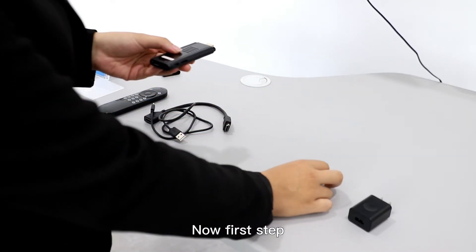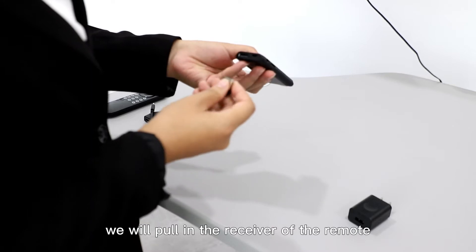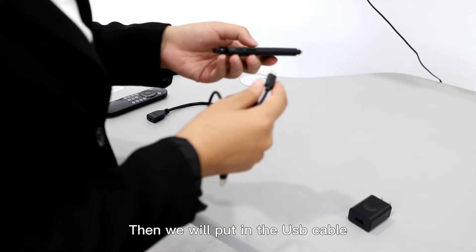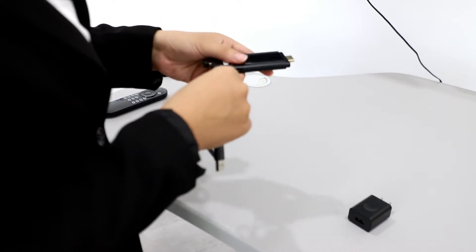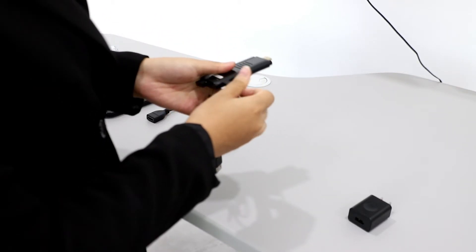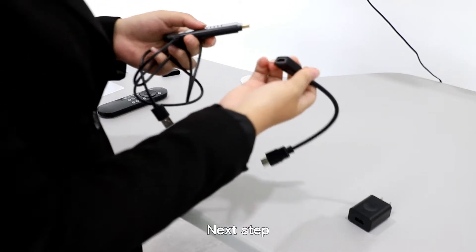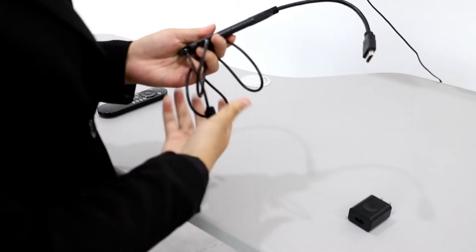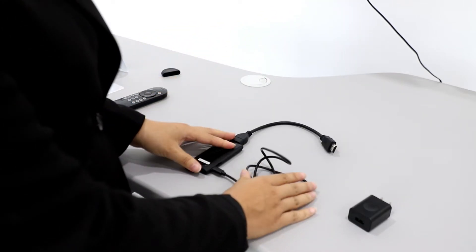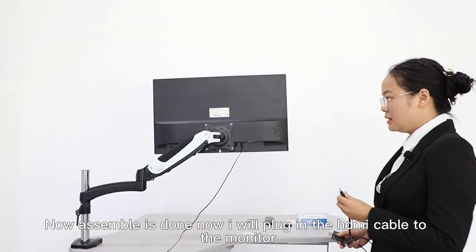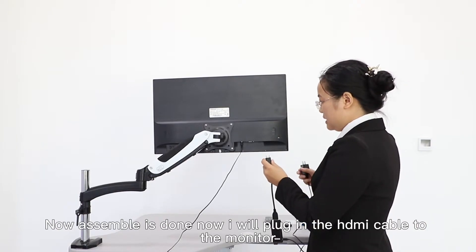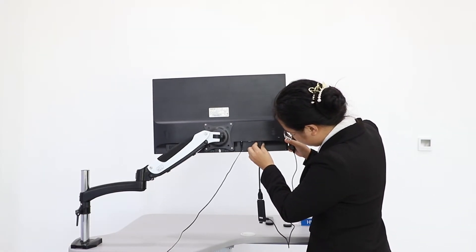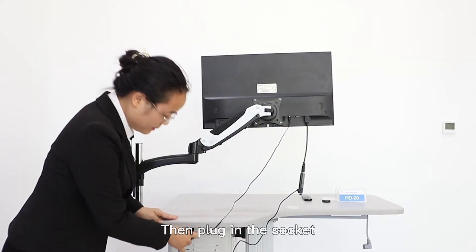Now first step, we will plug in the receiver of the remote. Then we will plug in the USB cable. Next step, plug in the HDMI cable. Now the assembly is done. Now I will plug in the HDMI cable to the monitor, then plug in the socket.